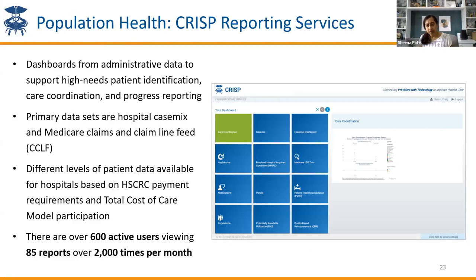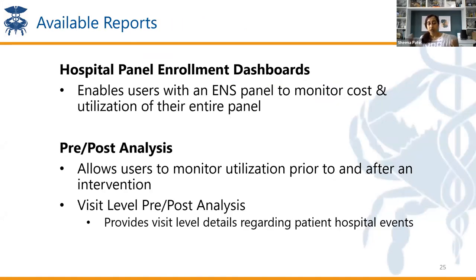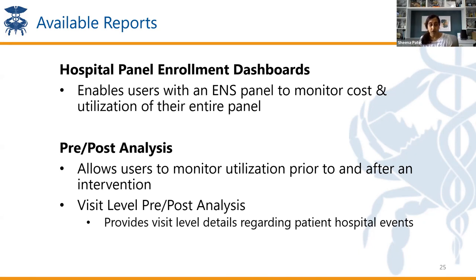For CRISP reporting services, we have a couple of reporting suites relevant to you. Many of these are based on hospital case mix and Medicare claims data, and you can get a sense of your overall utilization. These are dashboards available to any CRISP participant. The first is a hospital panel enrollment dashboard showing you, of your panel of patients, what the hospital utilization looks like — sliceable by payer, timeline, race, ethnicity, etc., so you can hone in on specific populations and your high-risk patients. We also support a pre-post analysis, which can be interesting if you're providing interventions. For example, if you're supporting a diabetes prevention program, you can run a pre-post analysis to monitor utilization prior to and after that intervention.